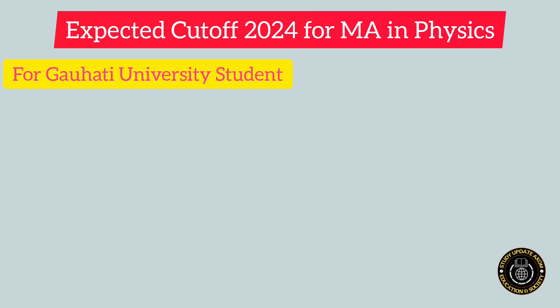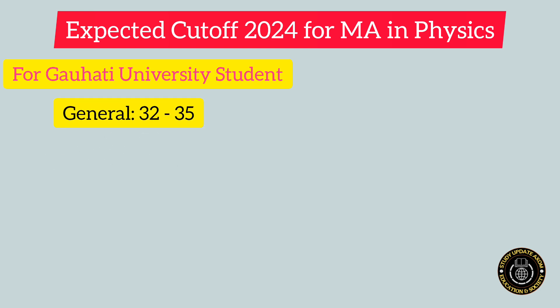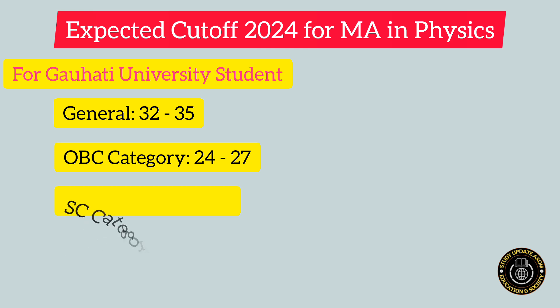Now, the main theme of the video: the expected cutoff for MA in Physics for the year 2024. For Guwahati University students, the cutoff for the general category may be in between 32 to 35. For the OBC category, the cutoff may be in between 24 to 27.